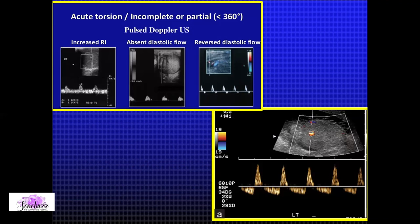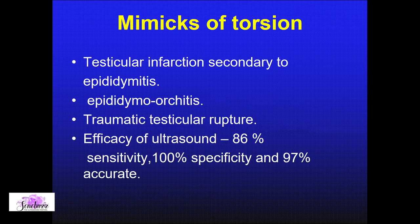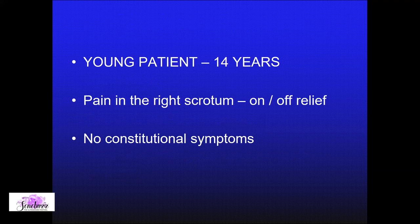Stressing the importance of ultrasound with Doppler: it is the best tool today to evaluate torsion of the testis, with almost 100% specificity and 97% accuracy. There will always be overlapping pathologies that mimic torsion — infective pathologies like epididymitis, epididymo-orchitis, spreading contiguous infections involving the tunica vaginalis, funiculitis, and trauma can all mimic torsion.